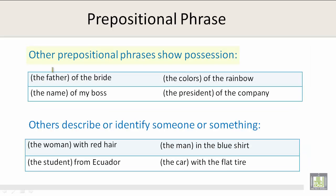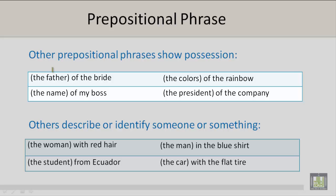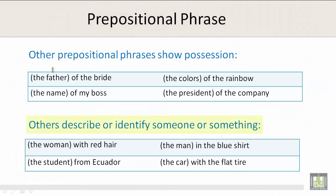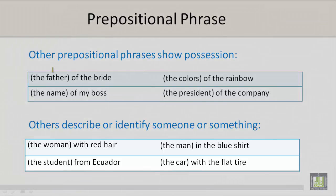Other prepositional phrases show possession. For example, the father of the bride, the colors of the rainbow, the name of my boss, the president of the company. Others describe or identify someone or something. The woman with the red hair. The man in the blue shirt. The student from Ecuador. The car with the flat tire.